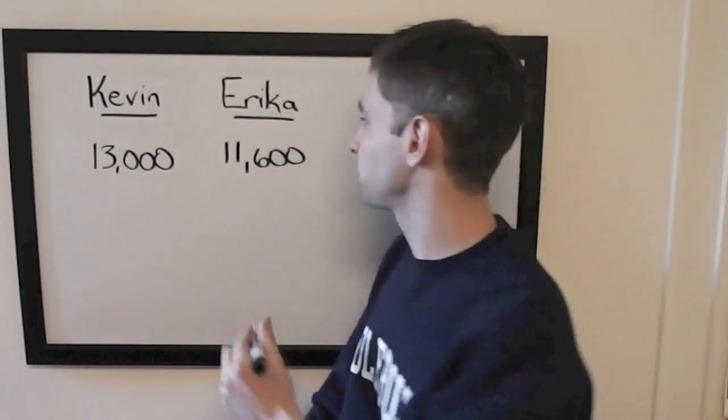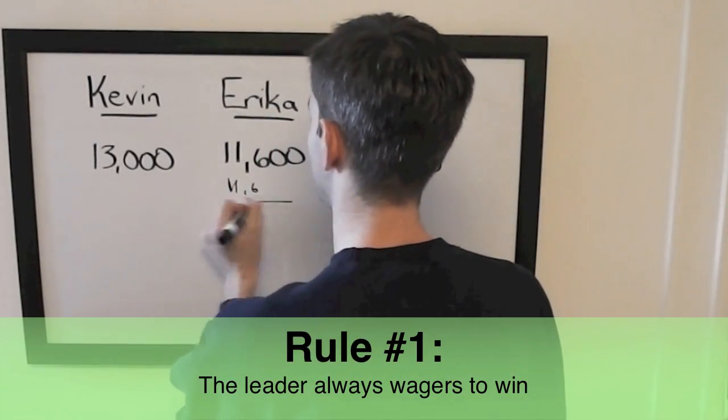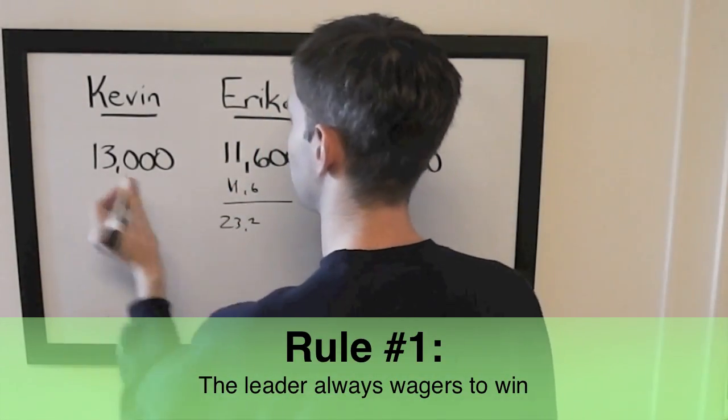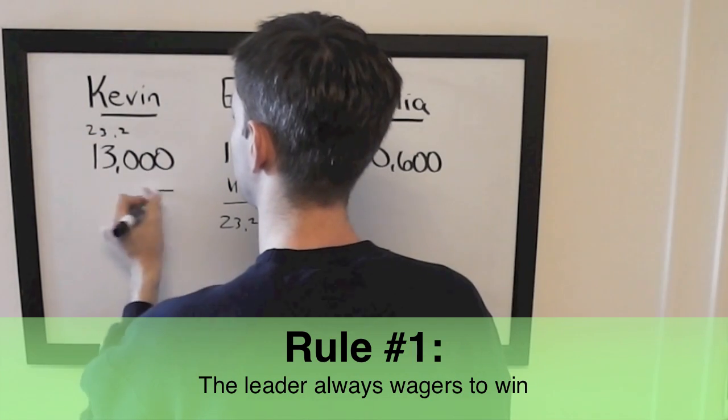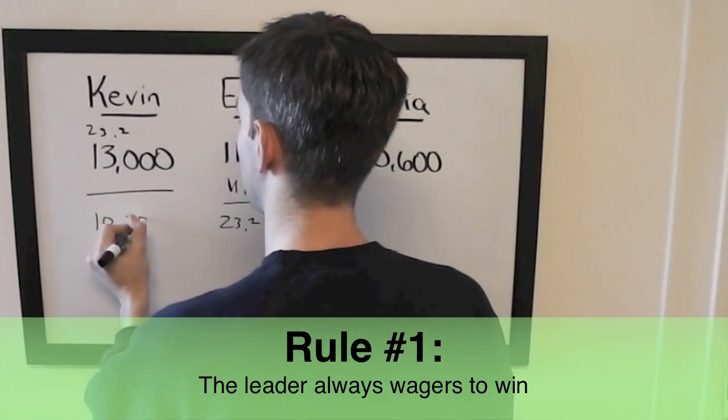We'll look at first and second, Kevin and Erica. Erica doubles up, she's going to have $23,200. So to cover her, Kevin will need to wager $10,201.